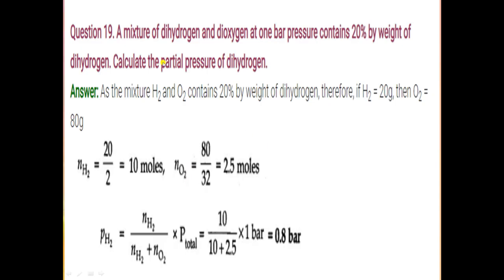Question number 19: a mixture of dihydrogen and dioxygen at 1 bar pressure contains 20% by weight of dihydrogen. Calculate the partial pressure of dihydrogen. 20% by weight of dihydrogen means 20 grams of hydrogen and 80 grams of oxygen are present in 100 grams of mixture. We calculate the number of moles because the formula is: partial pressure = mole fraction × total pressure.